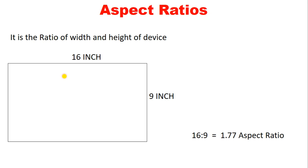Aspect ratio is the ratio of width and height of a device or an image. For example, suppose we have a TV with a width of 16 inches and a height of 9 inches. If we do 16 divided by 9, we get the answer 1.77, and that is called the aspect ratio.